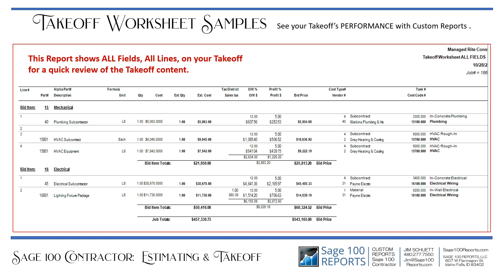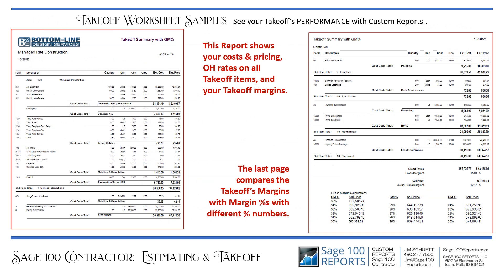Now, takeoff worksheet samples — these are reports that show the takeoff's performance in a custom report. This report shows all fields and all lines on your takeoff for a quick review of the takeoff content. Another takeoff worksheet sample shows your costs and pricing, overhead rates on all takeoff items, and your takeoff margins. It's a multi-page report, and the last page compares the takeoff margins with different possible margin percentages so you can change the result according to the percentage that you want or need.